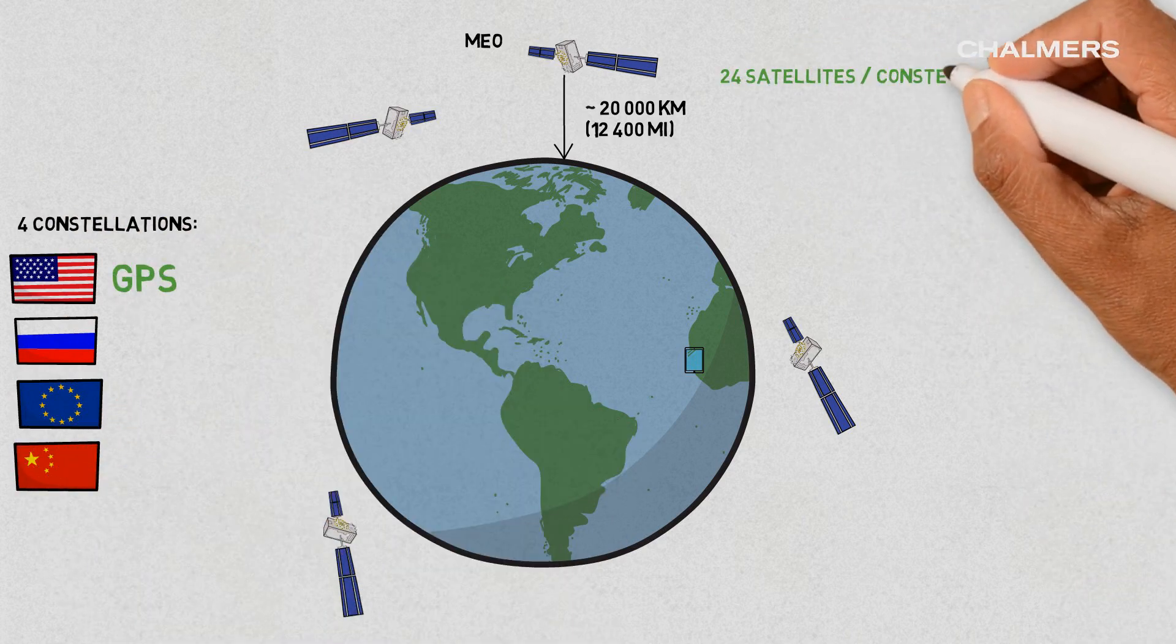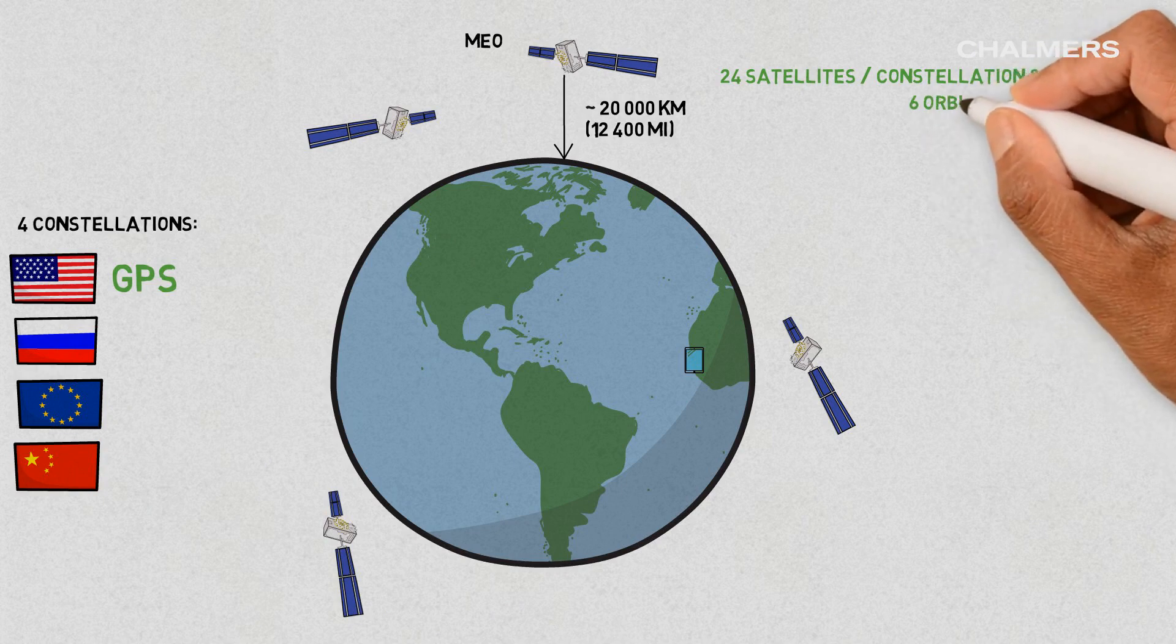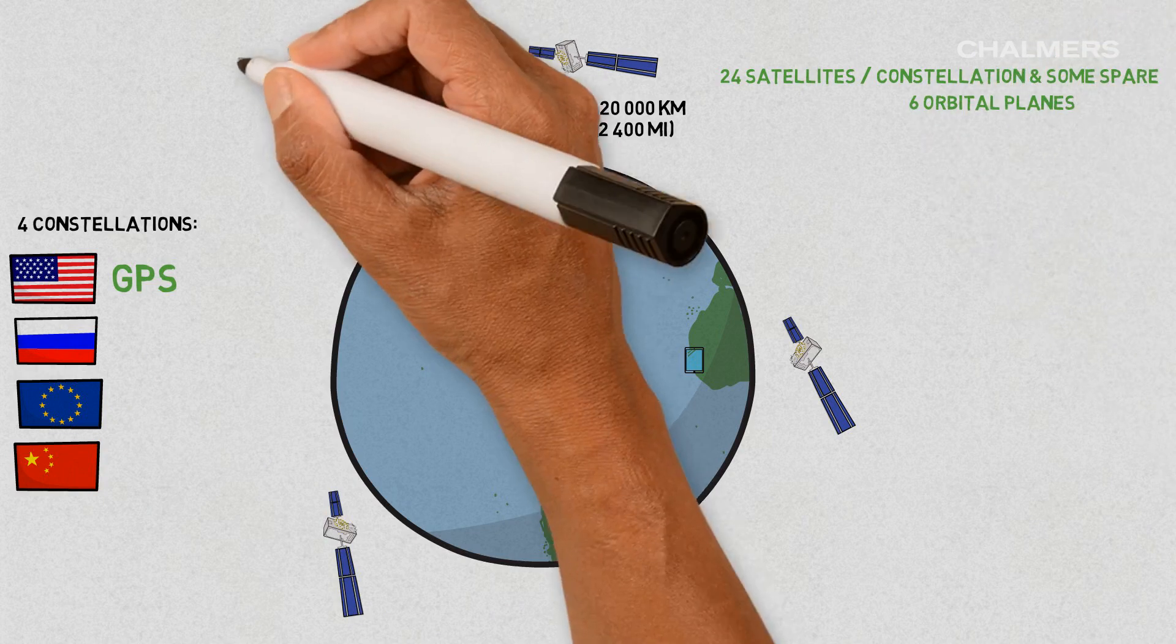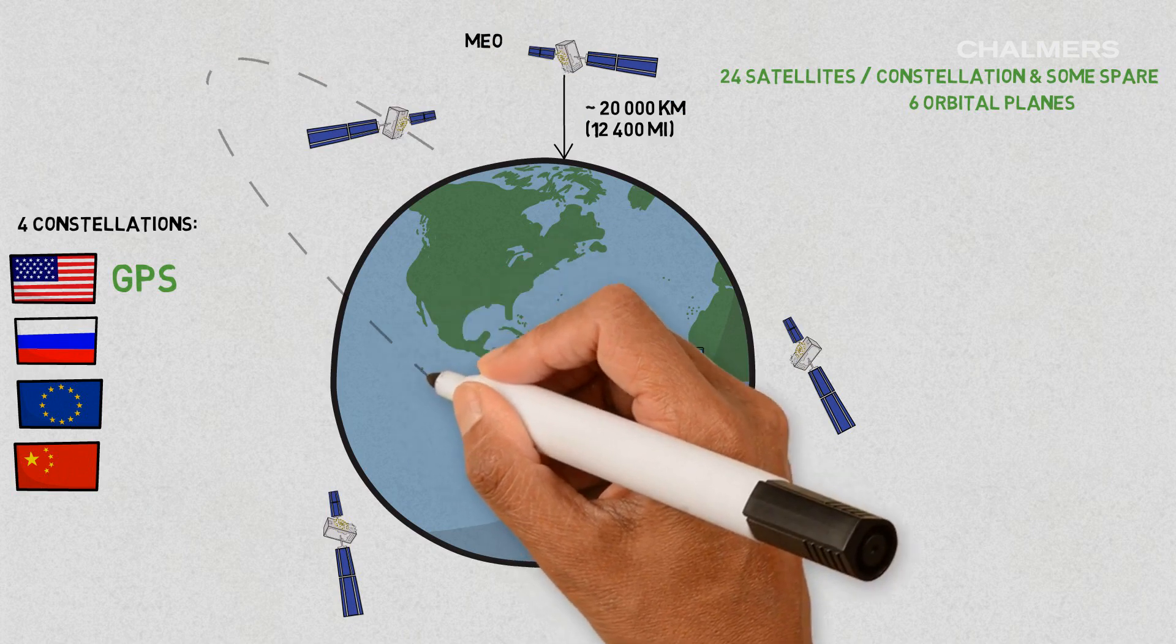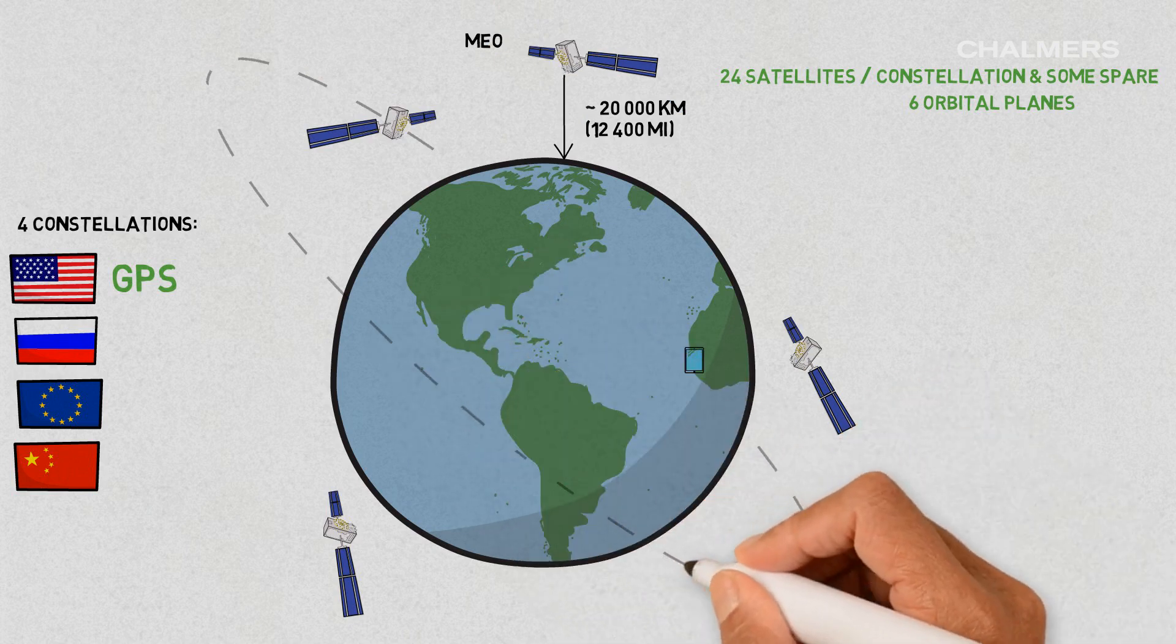For instance, the American one, called GPS, consists of 24 satellites distributed over 6 orbital planes. Those orbital planes are inclined with respect to the Earth equator by 55 degrees.